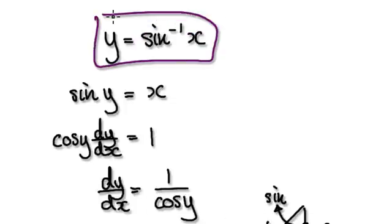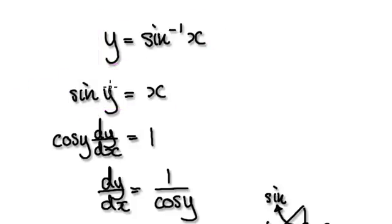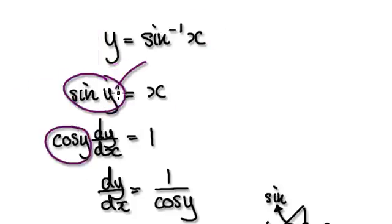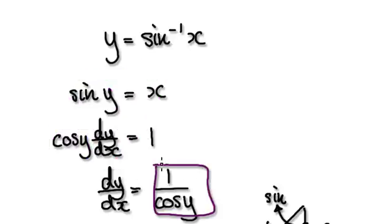Starting out with this, you would apply sine equally to both sides, and that would then take you to here. From here, you would use implicit differentiation. So differentiate this, that would then give you this. But because y is a function of x, we need to use the chain rule, so you've got to times it by dy/dx. Differentiate this, it will give you 1. So dy/dx equals this thing here.